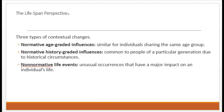We are likely to see major and long-lasting influences of the COVID-19 pandemic as well. And then finally, non-normative life events — these are unusual occurrences that have a major impact on an individual's life. These are things that don't necessarily happen to everyone. For example, the death of a parent at a young age would have influences on a person's development, but they're not common to the majority of people.